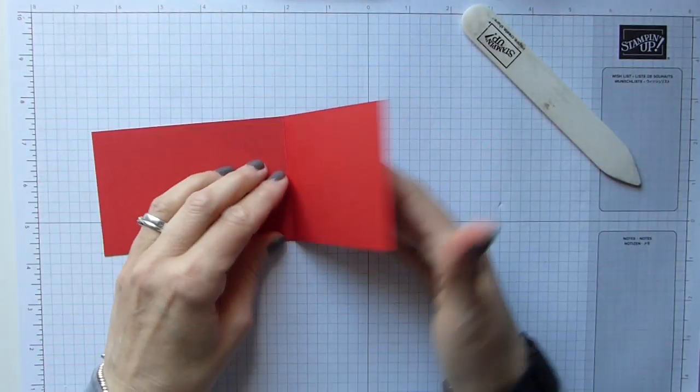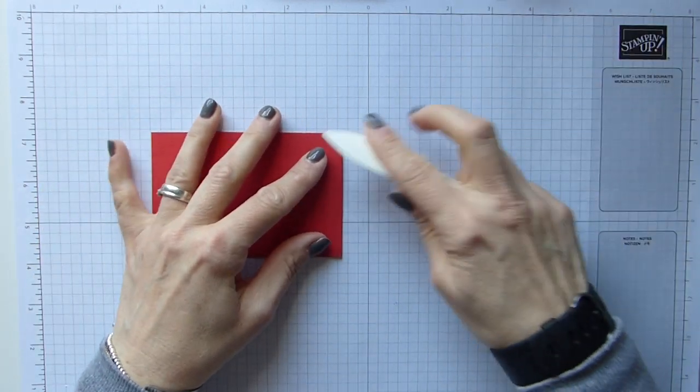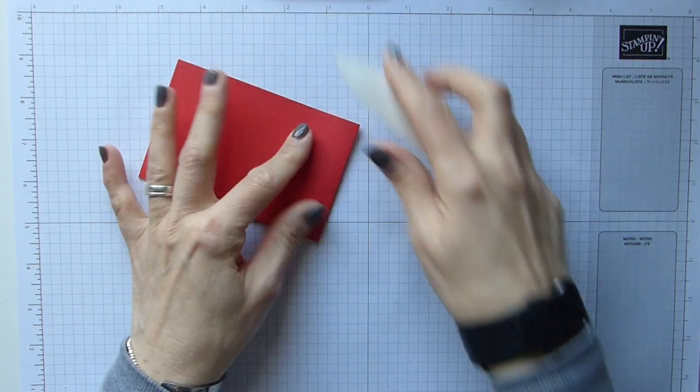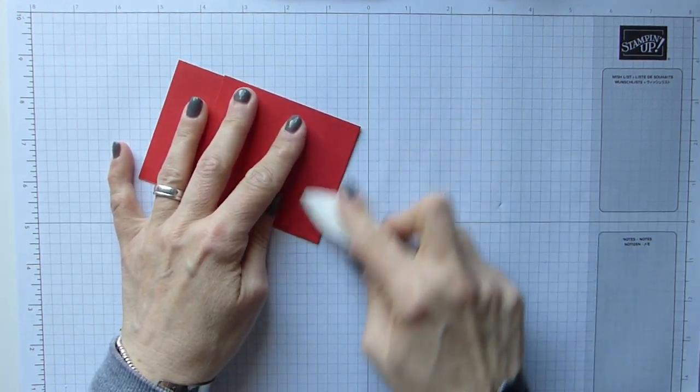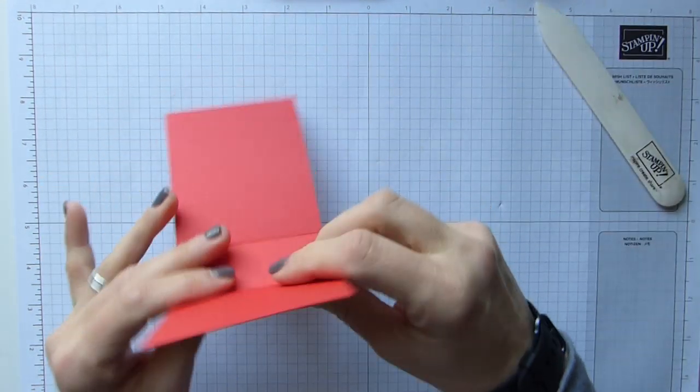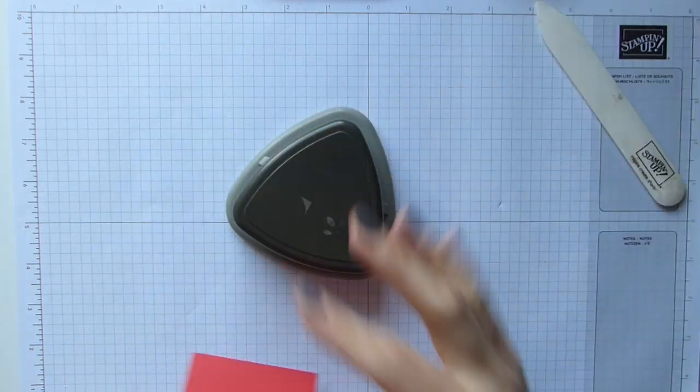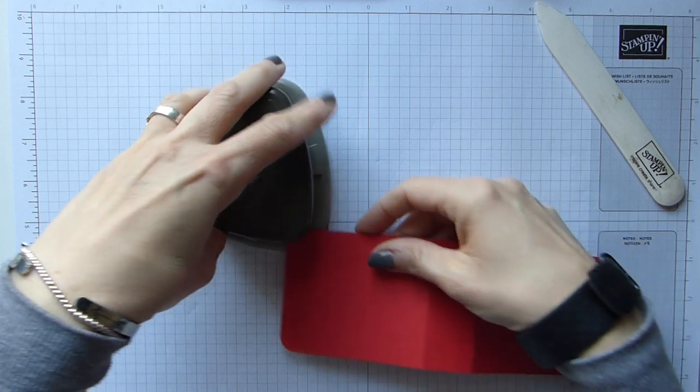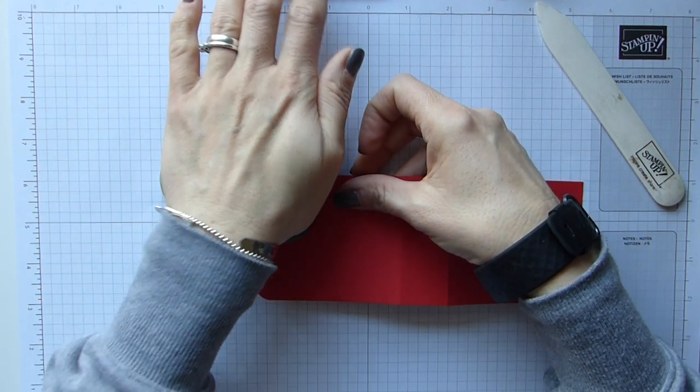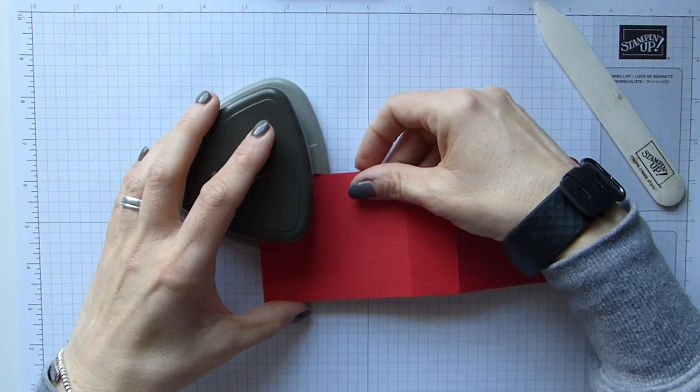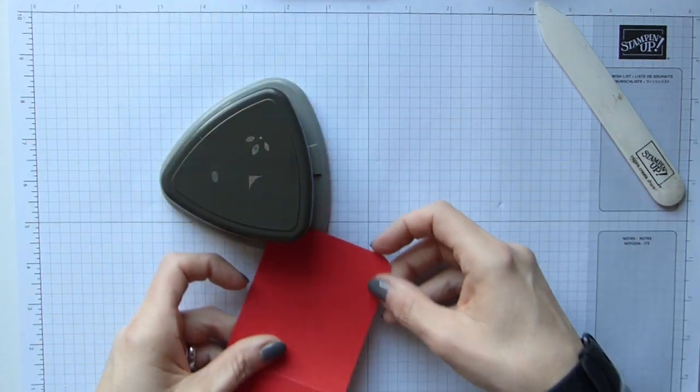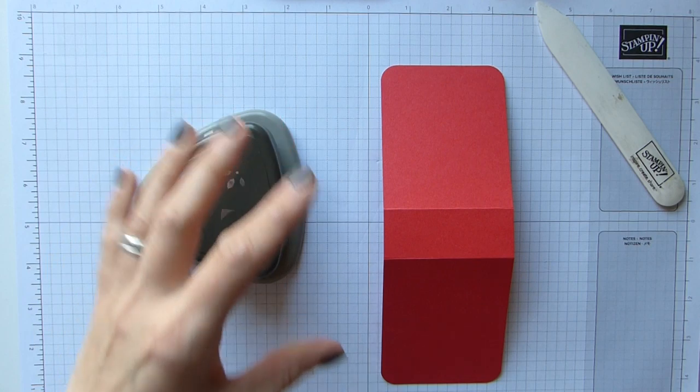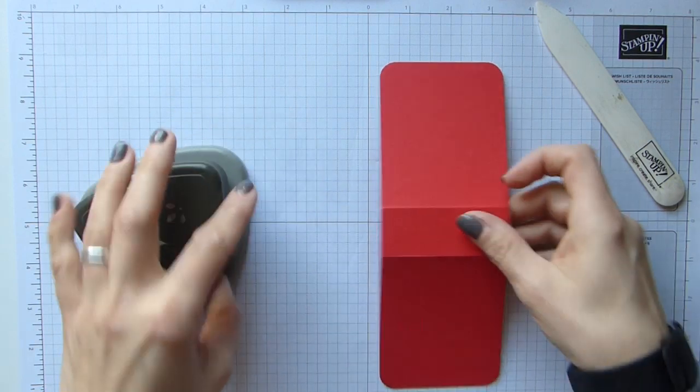I'm going to just pop that to my side because I will need it again. I'm just going to fold and burnish those two score lines. And I'm using Poppy Parade on this one, not a color I've used for a while, but I do like it. Detailed trio punch just to round the corners and do the same on both sides. Just takes off those sharp edges.